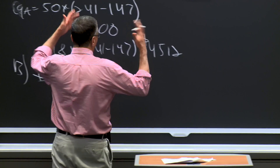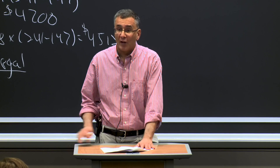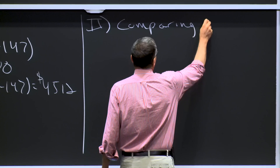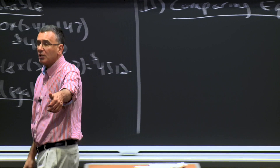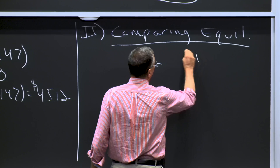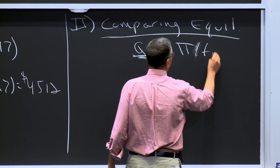So now let's ask why we care about all this. We care because it matters for economic welfare — which is ultimately what matters in this class. Let's go to the second thing I want to cover, which is comparing equilibria. We've now covered three types of market structures: perfect competition, monopoly, and oligopoly. Let's compare them in two ways: quantity sold, and profits per firm.